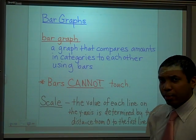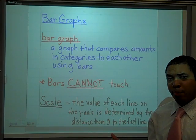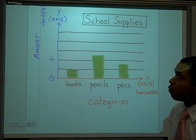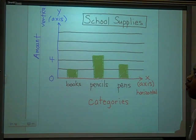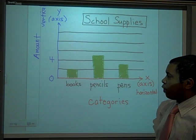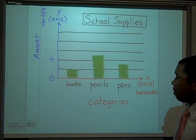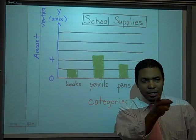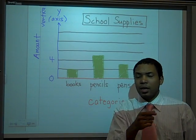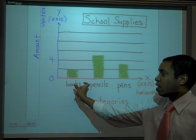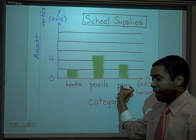Let's actually take a look at a bar graph so we can get the names of the parts and identify where they are and also understand it and interpret it. So this is a bar graph right here about school supplies and we see that there is a bar for books, pencils, and pens. On a bar graph, on your x-axis, that goes horizontal across, we are going to see categories listed. So the categories here are books, pencils, pens.